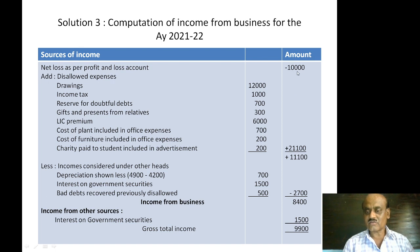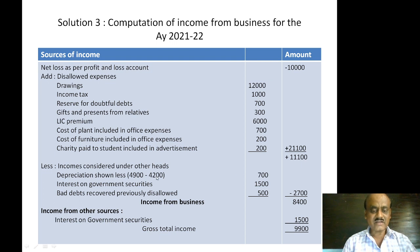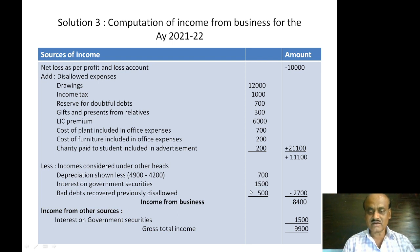So net loss is minus Rs.10,000 and disallowables add up to plus Rs.21,100. The net result is Rs.11,100. Then we deduct: depreciation shortfall Rs.700, interest on government security Rs.1,500, bad debts recovered previously disallowed Rs.500 — giving a deduction of Rs.2,700. Income from business is therefore Rs.8,400.